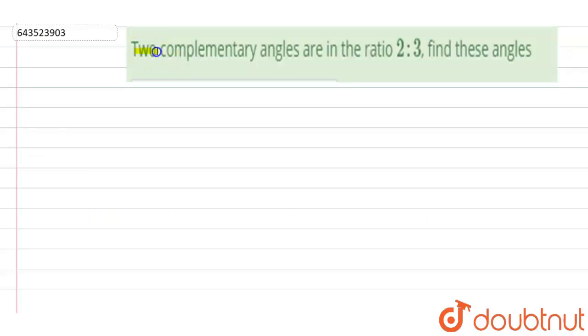The question says that two complementary angles are in the ratio 2 is to 3. Find these angles.